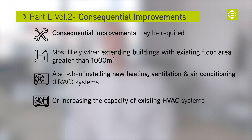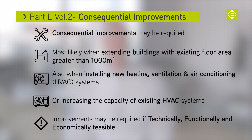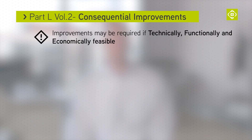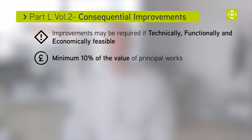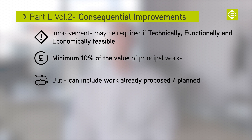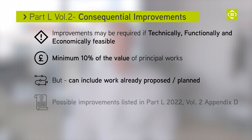Improvements may be required if they are technically, functionally and economically feasible, with a minimum of 10% of the value of the principal works to be spent as a consequential improvement. These can, however, include work that is already planned or proposed for the scheme. Possible improvements are listed within Appendix D of Approved Document L Volume 2.